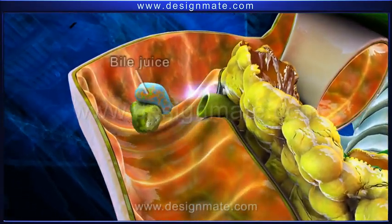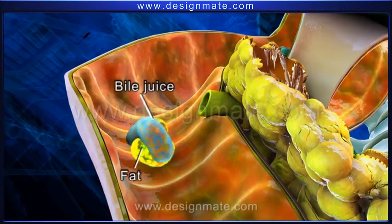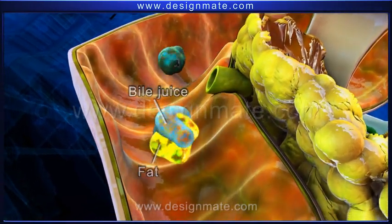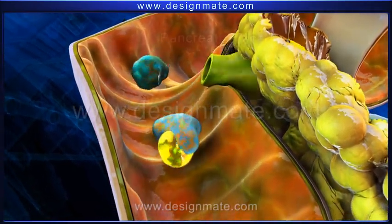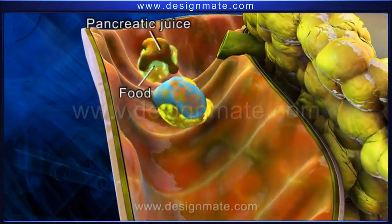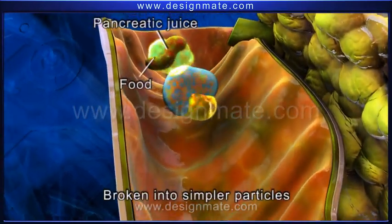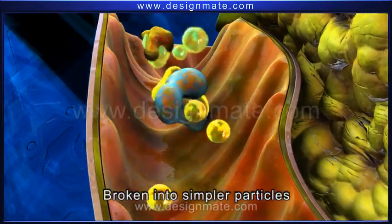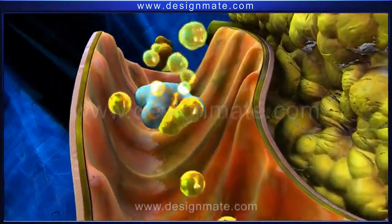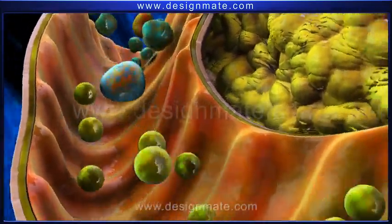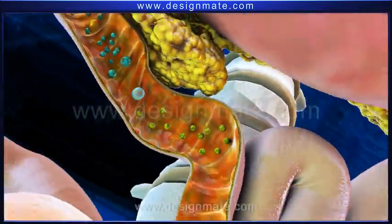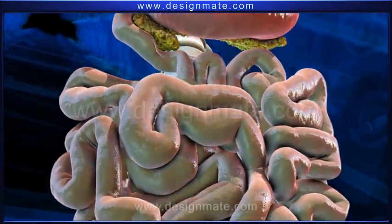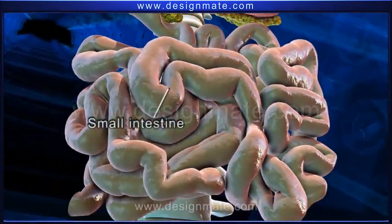The bile juice acts on the fat molecules and the pancreatic juice acts on the food molecules, breaking them down into simpler particles. After this, the digested food particles move into the lower part of the small intestine.